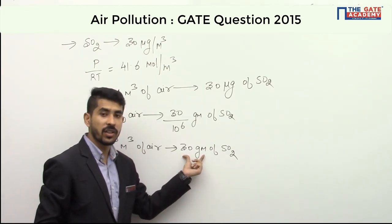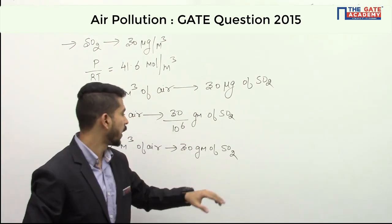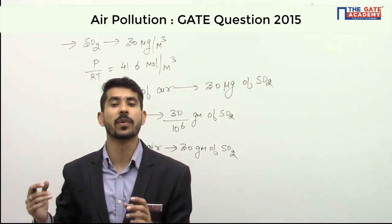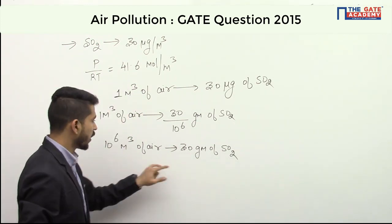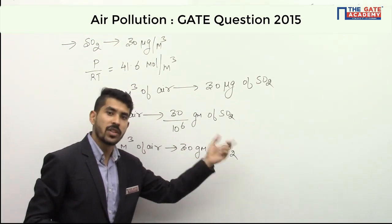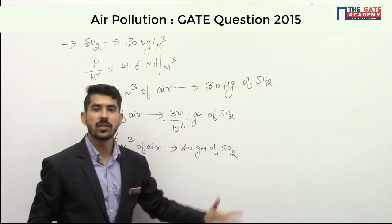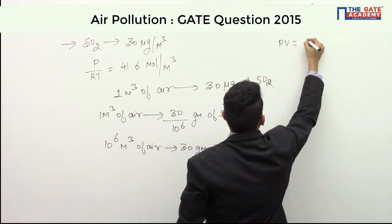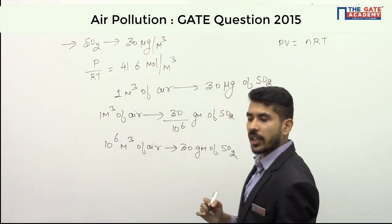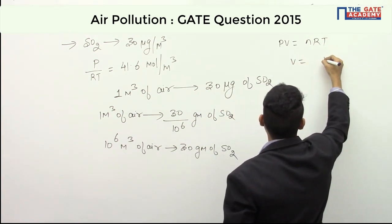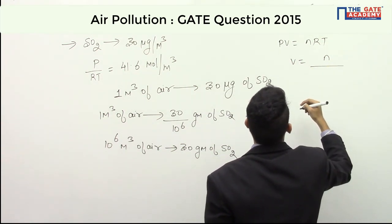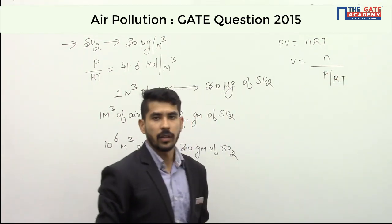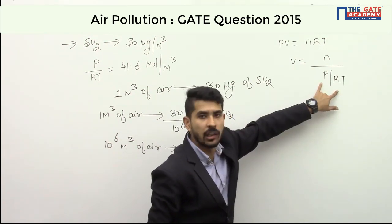He is asking in parts per million — I can see 1 million over here. So if I can convert this weight of SO₂ into volume of SO₂, I can easily calculate the concentration in parts per million. I will calculate the volume occupied by 30 grams of SO₂. We know that PV = nRT, so volume equals nRT/P, which I can write as n divided by (P/RT).